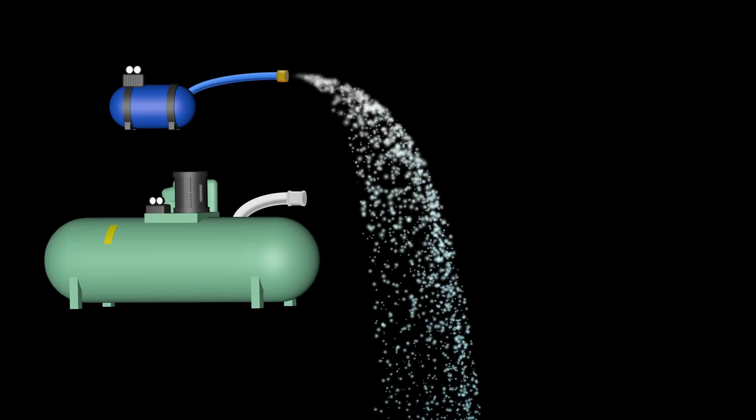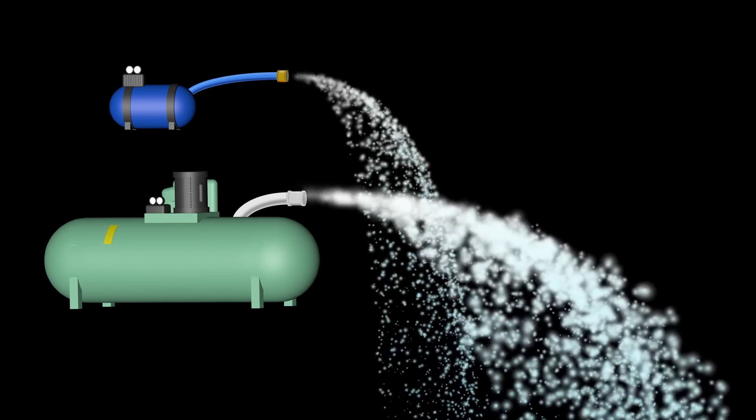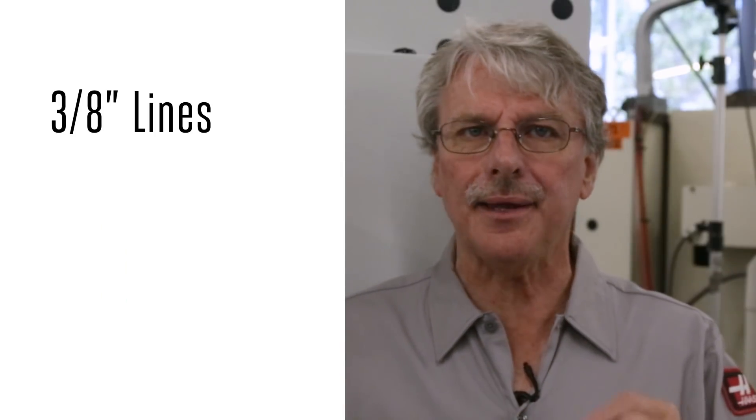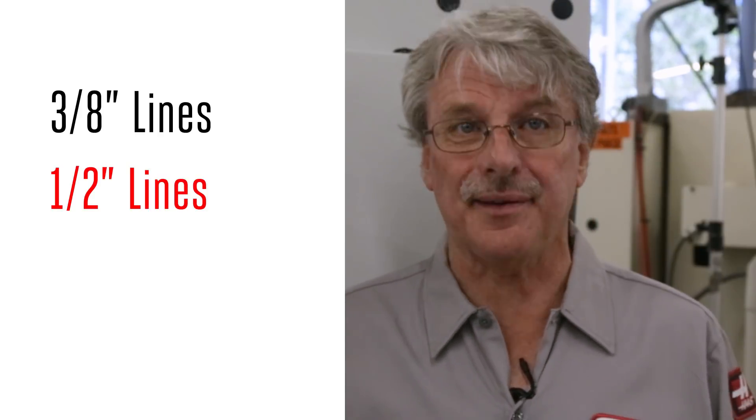First, you need a big enough compressor to match the volume needs of all your machines. But second, you need large enough air lines to deliver that volume to each of them. Just as a compressor tank only holds so much volume, narrow air lines limit the amount of volume that can get through them. So we recommend 3/8 inch lines, but half-inch diameter lines would be a great way to go as these will give you more volume of air to each machine.